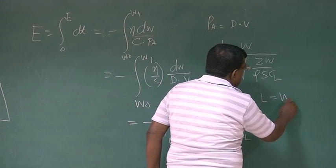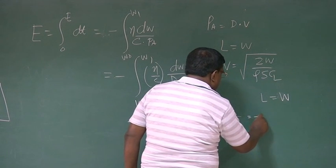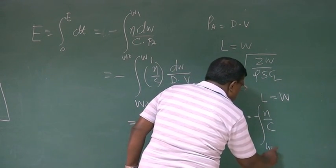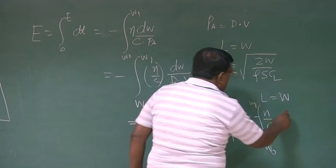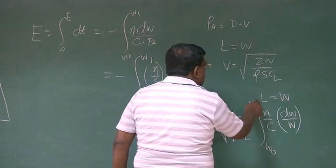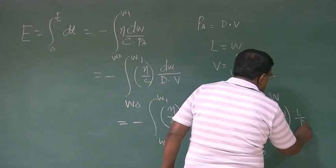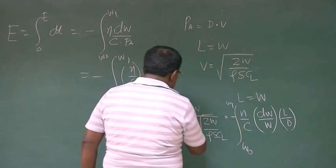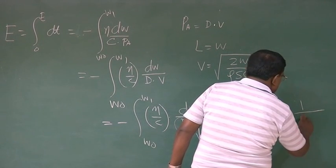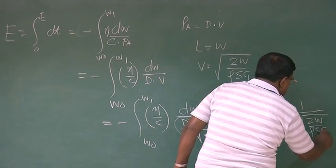For cruise, lift equal to weight. So what I will do? I will write this as minus η by C, W₀ to W₁, I will write dW by W. Since W equal to lift, I compensate this W by putting L and already D is here. Then I have under root 2W by ρS, CL.